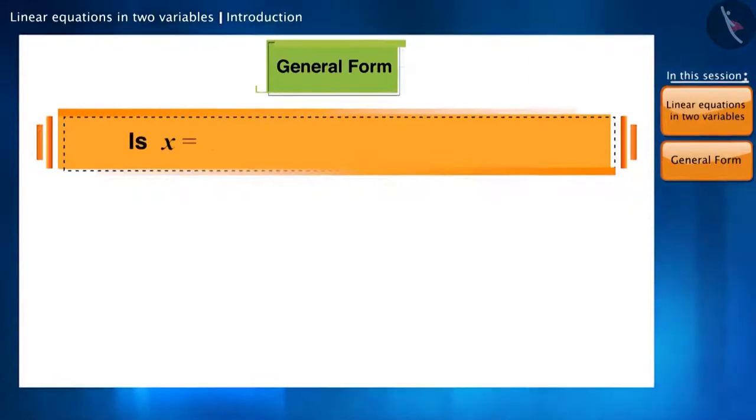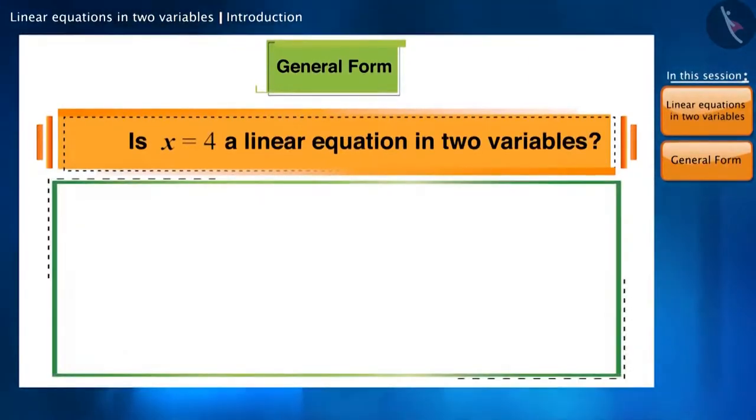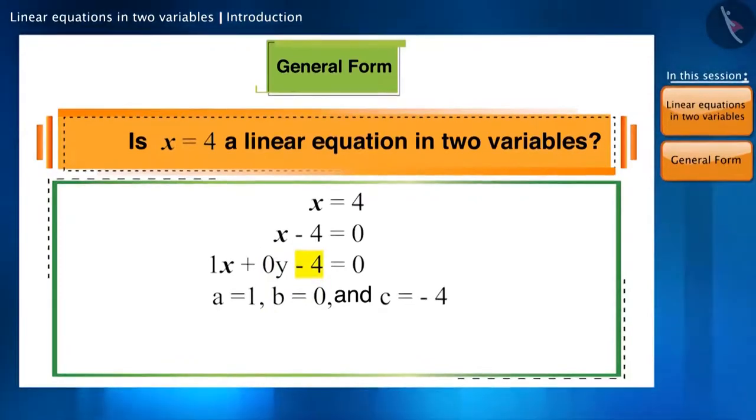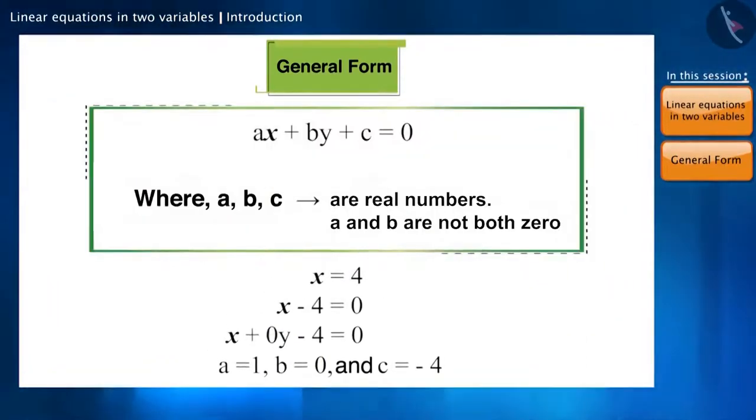Is the equation x is equal to 4 a linear equation in two variables? We can write it as x minus 4 is equal to 0 or x plus 0y minus 4 is equal to 0 as well. Now, it is in the form of a linear equation in two variables. Here, a is equal to 1, b is equal to 0, and c is equal to minus 4. So we can say that even if either a or b is 0, the equation can be represented in the form of a linear equation in two variables.